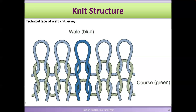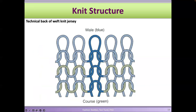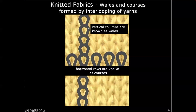If you look at the back of a jersey fabric, the crown is forefront. So when you look at the back of a jersey, you see those half circles — half circles going this way, half circles going that way. These are your wales going vertically, and these are your courses going horizontally.